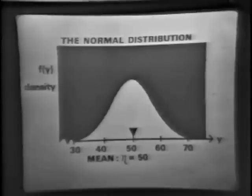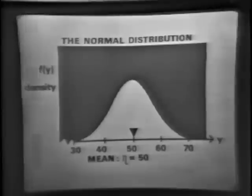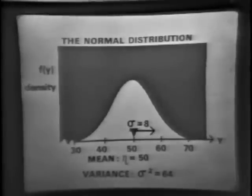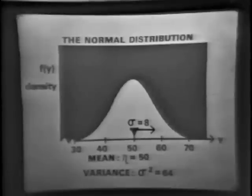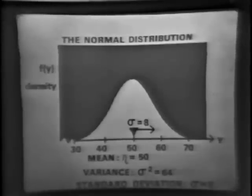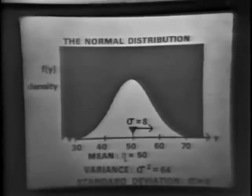Now that I've told you about the mean of the distribution, let's talk about the variance. I'll just tell you that in this case the variance, sigma squared, is equal to 64. Now, it's a very interesting thing about the normal distribution: if you take the square root of the variance, you get something called the standard deviation, sometimes referred to as the scale parameter of the normal distribution. The standard deviation of this distribution, sigma, is equal to 8.